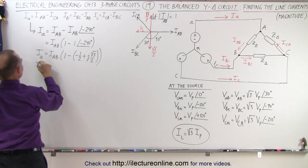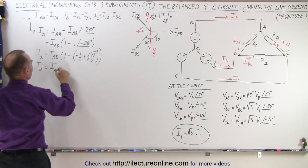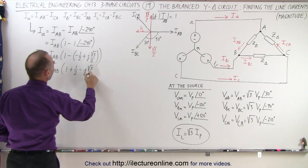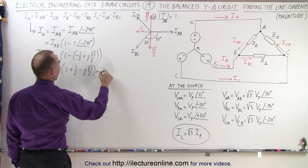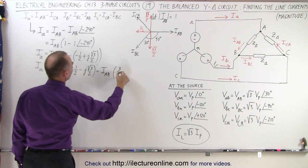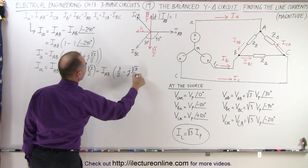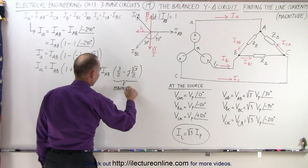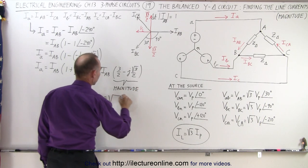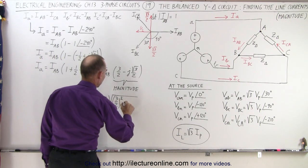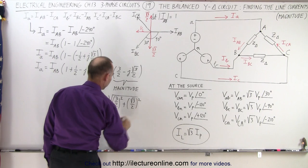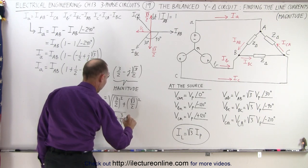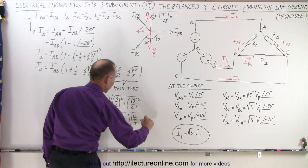Simplifying, Ia = Iab × (1 + 1/2 − j√3/2) = Iab × (3/2 − j√3/2). To find the magnitude of this expression, we take the square root of (3/2)² + (√3/2)², which equals √(9/4 + 3/4) = √(12/4) = √3.